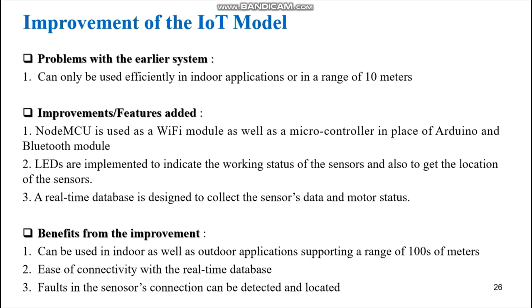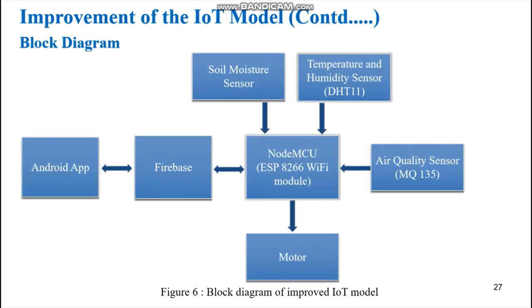The improvements mean the system can now be used in indoor as well as outdoor applications, supporting a range of 100 meters. There is ease of connectivity with the real-time database since NodeMCU has inbuilt Wi-Fi connectivity, and faults in sensor connections can be detected and located using the LEDs. In the improved IoT model, a Firebase database is used, and the Android app is also improved to allow the user to send signals to Firebase, from which NodeMCU retrieves information to control the motor.